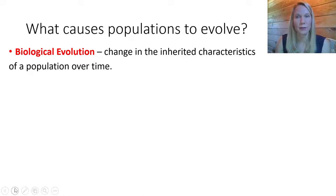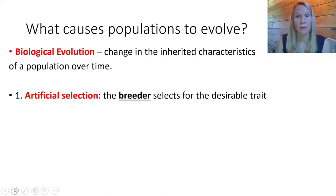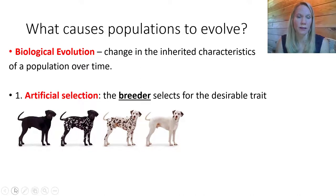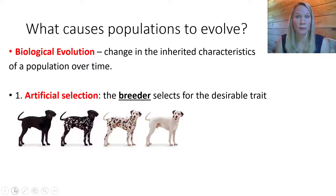In his book, Darwin begins by helping people understand that we have been doing something very similar to natural selection through an artificial mechanism called artificial selection. This means that a breeder — us, humans — breeding animals or plants for a purpose, are actually selecting for a particularly desirable trait. For example, we talked about breeds of dogs: here we have four different variations of dogs in terms of coat color and appearance.